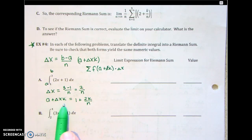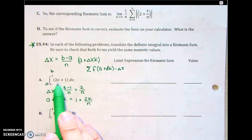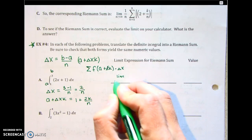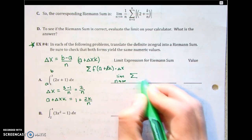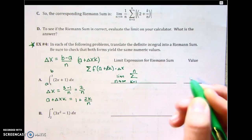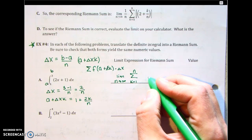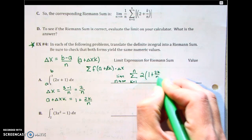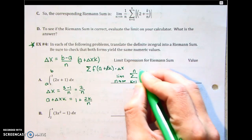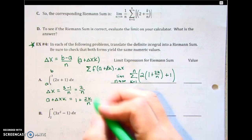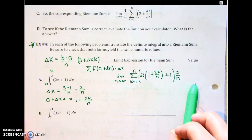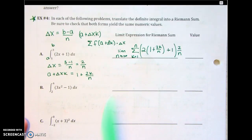We plug a plus delta x k into our function. Our function is 2x plus 1. So we rewrite it with a limit: limit as n goes to infinity, sigma from k equals 1 to n of 2 times (1 plus 2k over n) plus 1, all multiplied by delta x which is 2 over n. In BC calculus you find this by hand, but here we just plug it into the calculator.